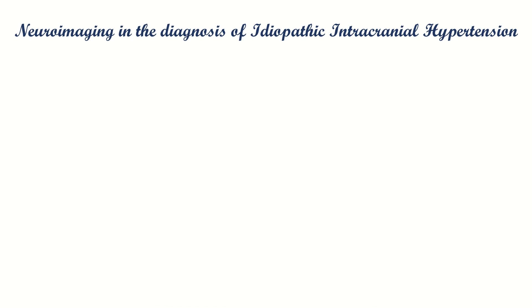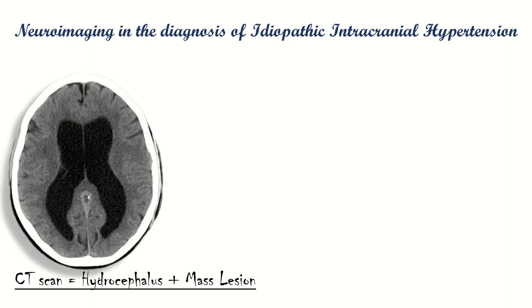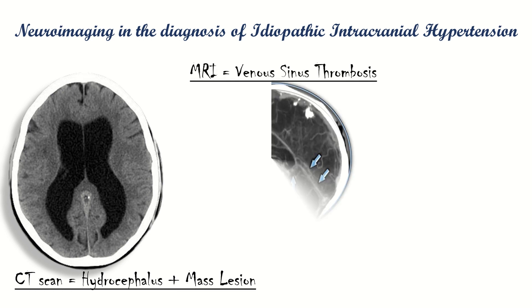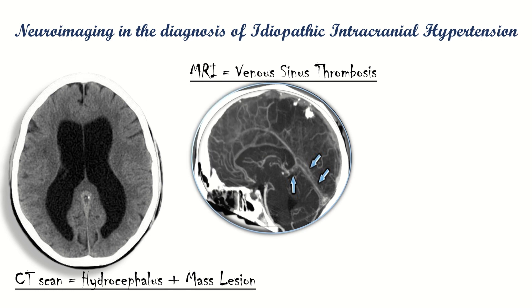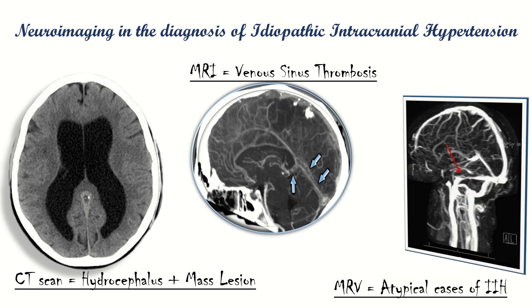Neuroimaging is essential to exclude other causes such as hydrocephalus, mass, or structural lesion. A CT scan is adequate to exclude hydrocephalus and mass lesion. However, other causes such as venous sinus thrombosis are not detected on an unenhanced CT scan, and further imaging with MRI may be required. A prospective study evaluated magnetic resonance venography in women with IIH and concluded that MRV may be useful in atypical cases.